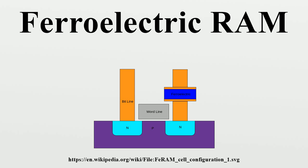When an external electric field is applied across a dielectric, the dipoles tend to align themselves with the field direction, produced by small shifts in the positions of atoms and shifts in the distributions of electronic charge in the crystal structure. After the charge is removed, the dipoles retain the polarization state. Binary 0s and 1s are stored as one of two possible electric polarizations in each data storage cell.